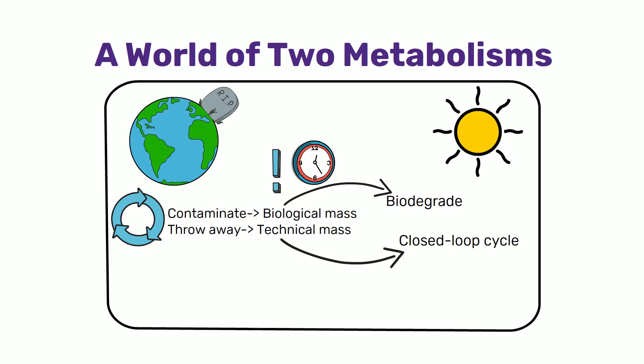Things that go into the organic metabolism must not contain mutagens, carcinogens, persistent toxins, or other substances that accumulate in natural systems. In the same way, biological nutrients are not designed to be fed into the technical metabolism. Now let's look at the biological and technical metabolism deep in detail.